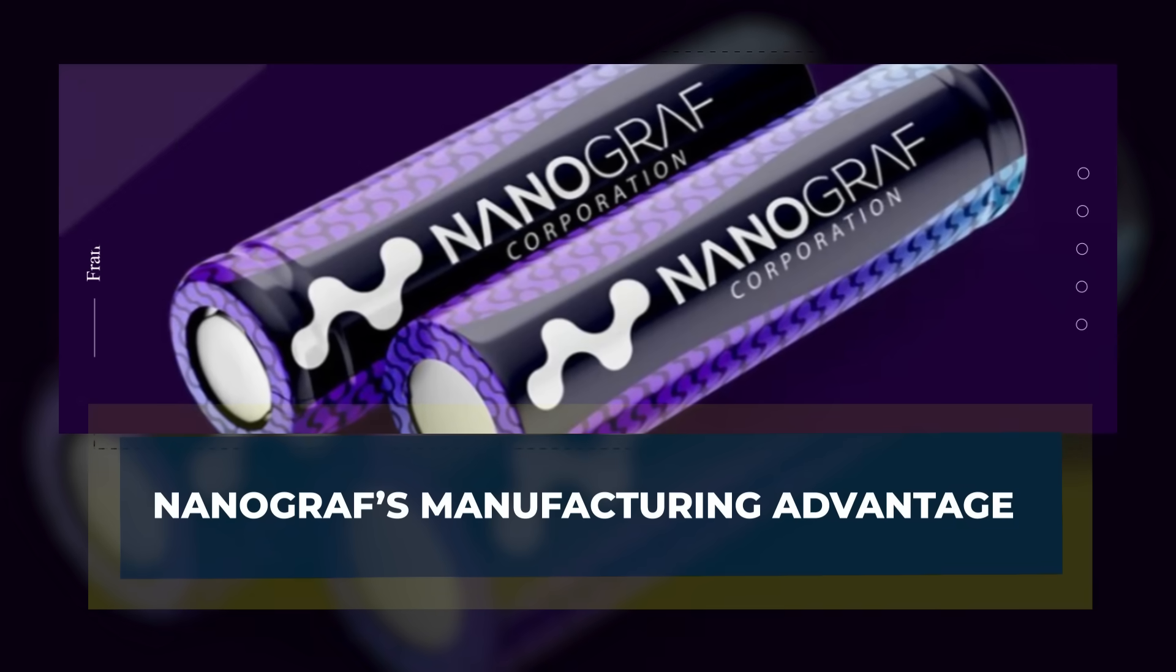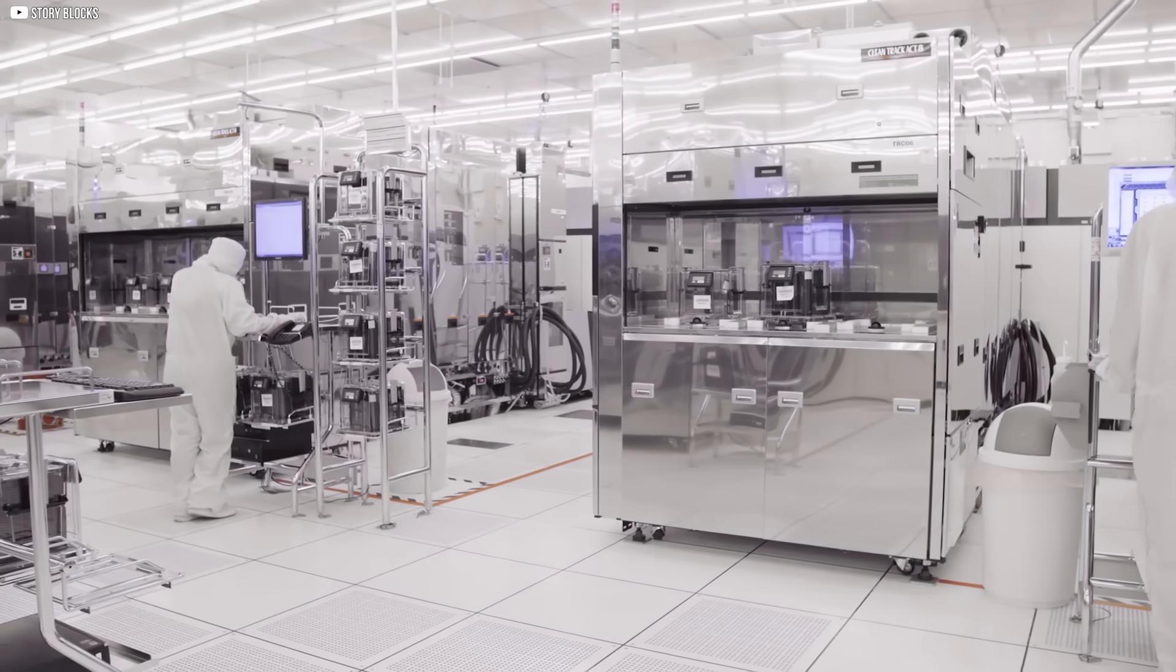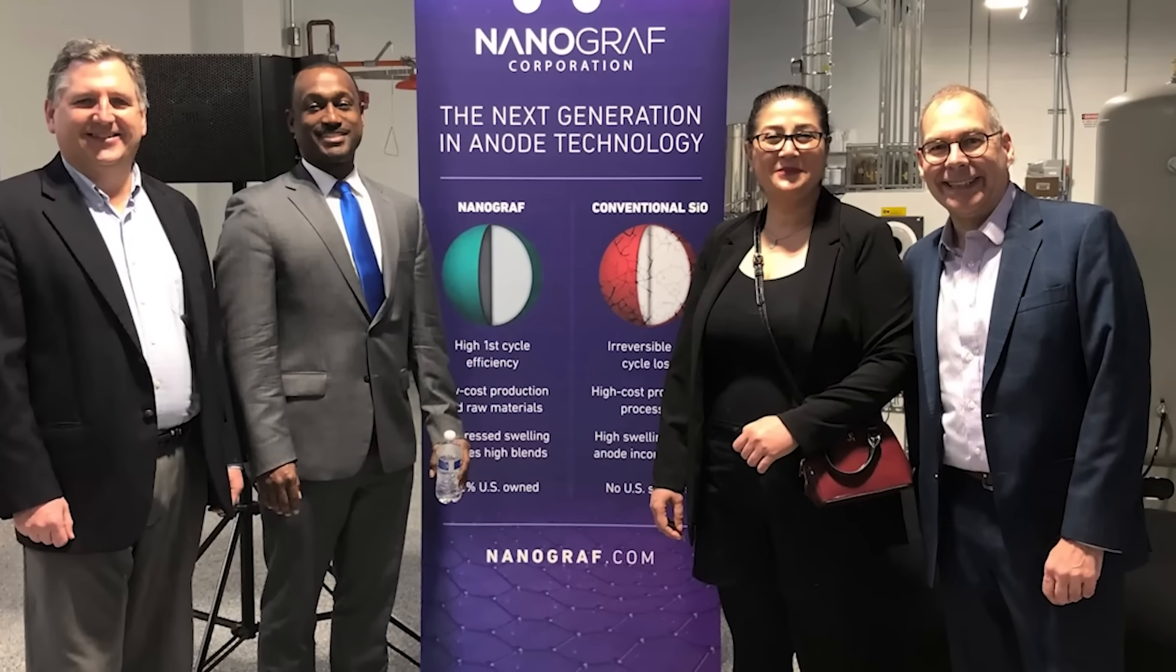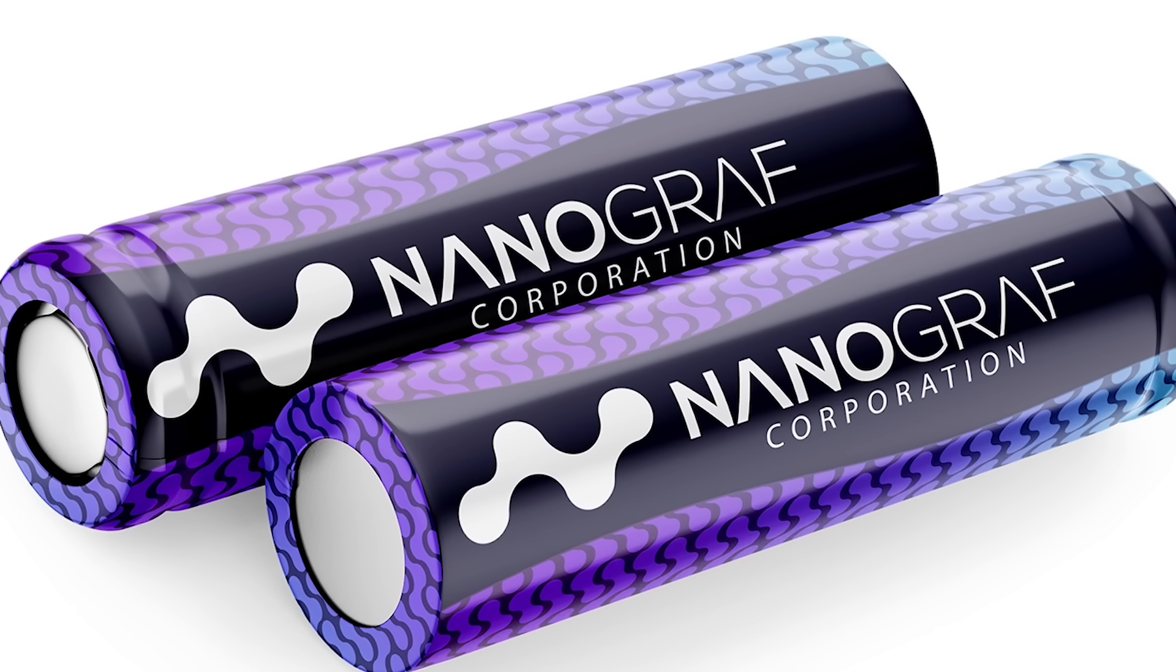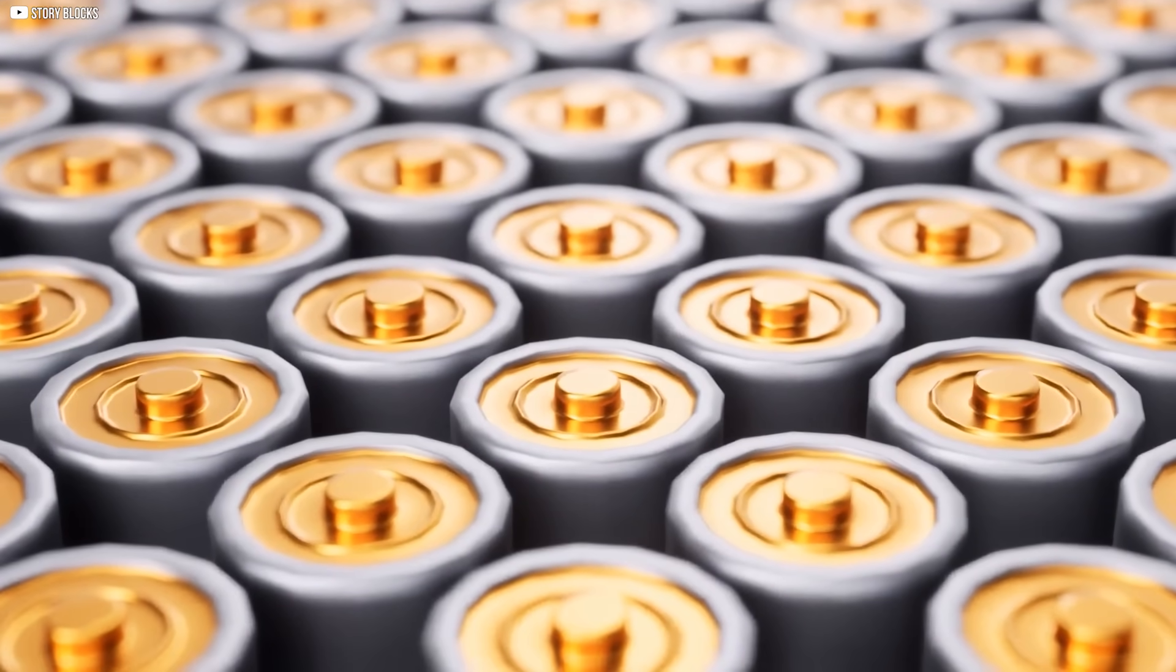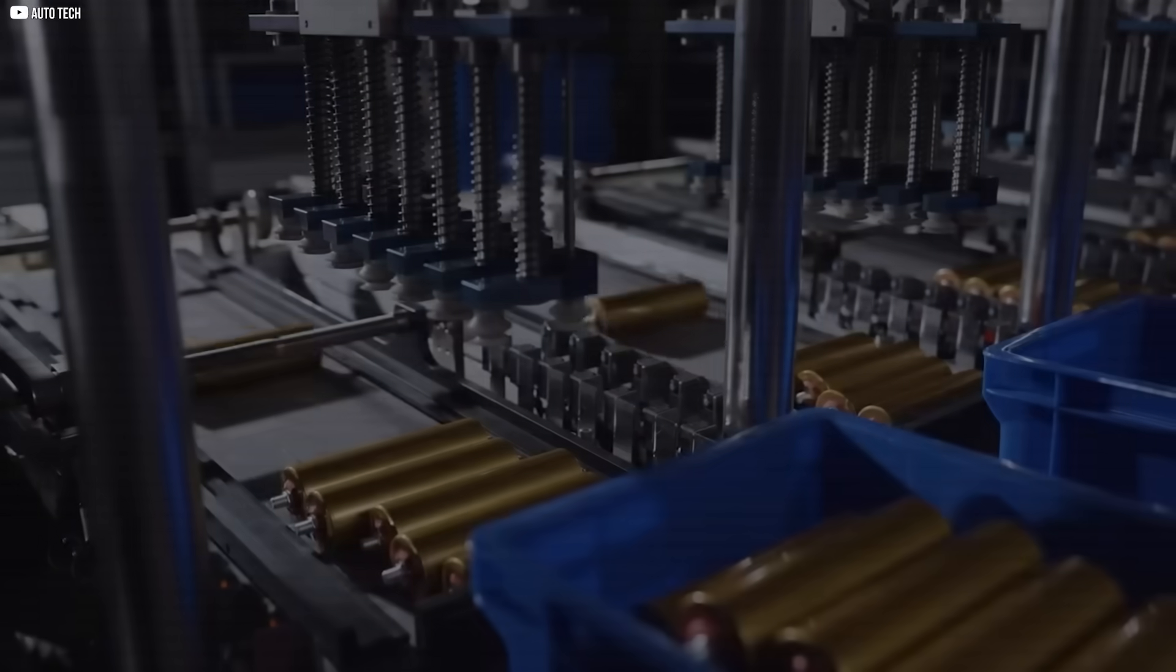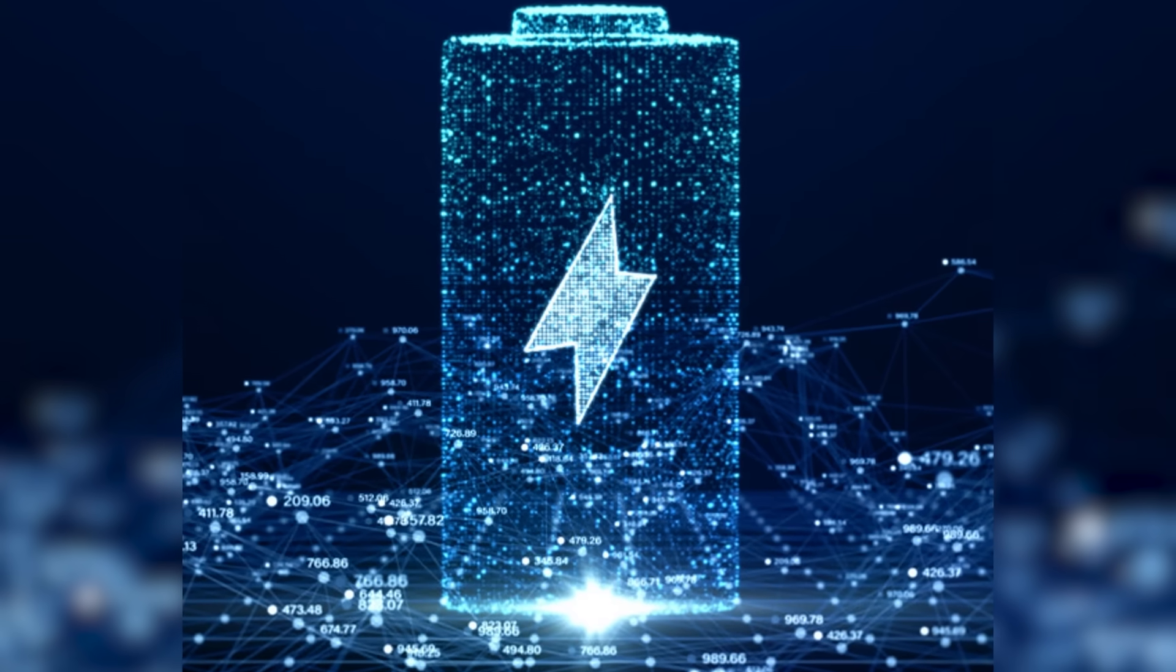Some breakthroughs stay trapped in labs. They win awards, but never leave the glass walls. Nanograph avoided that fate. Their battery isn't just advanced. It's buildable. Their process fits into existing production lines. No need to tear down factories. No need to reinvent the wheel. That's rare and powerful.